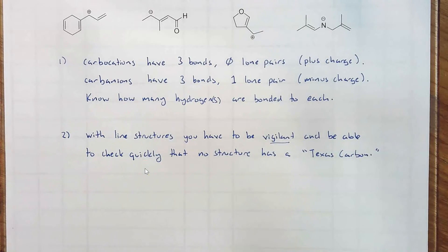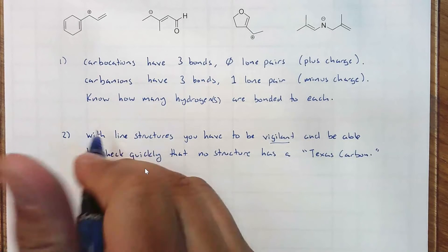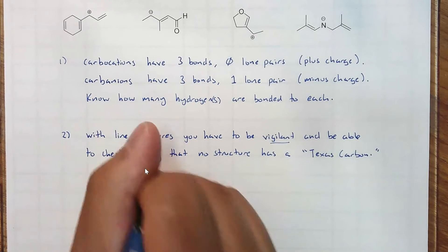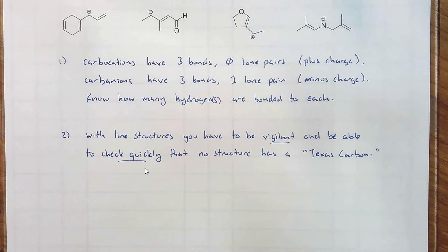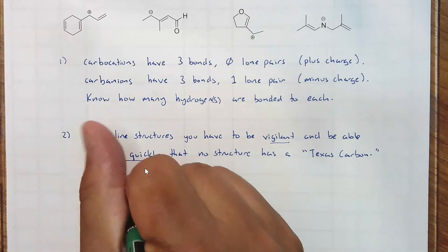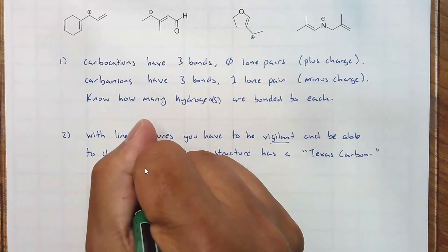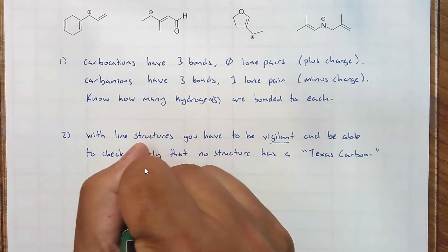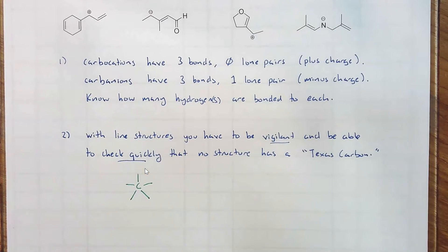Number two: with line structures you have to be vigilant and be able to check quickly that no structure has what's called a Texas carbon. You know the flag of the Lone Star State has a five-pointed star. We do not want to see that on a carbon. We don't want to see a carbon with five bonds.